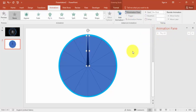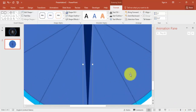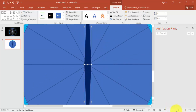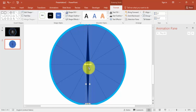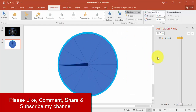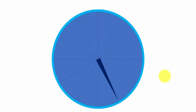Select the needle, press Ctrl+D to make a duplicate, go to Format > Rotate and say Flip Vertical. Bring it exactly here and align it properly. Now group both — right-click and Group. Then select the needle below and set its shape fill to No Fill. Now go to Animations, Add Animation, and Spin — you can see it's spinning perfectly.